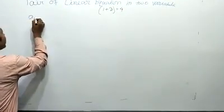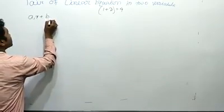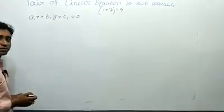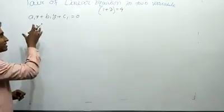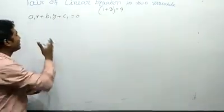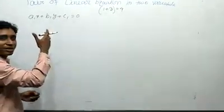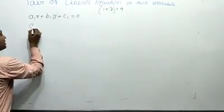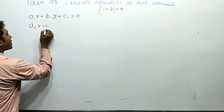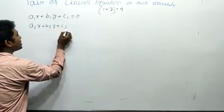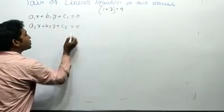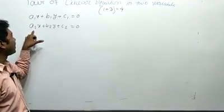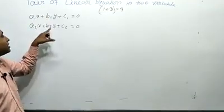The general form is: a₁x + b₁y + c₁ = 0, and the second equation is a₂x + b₂y + c₂ = 0.